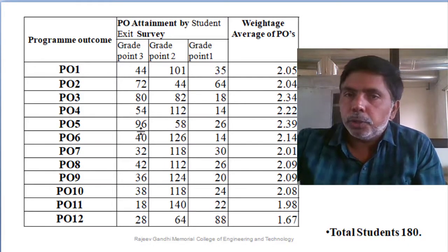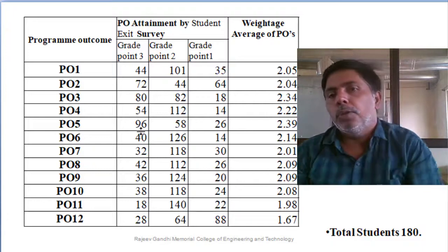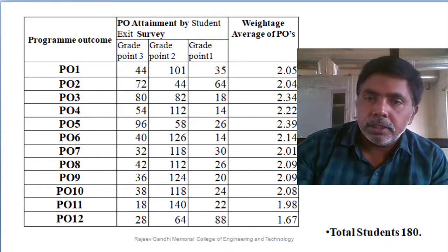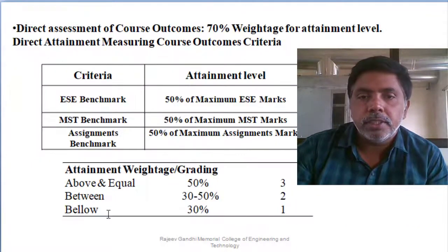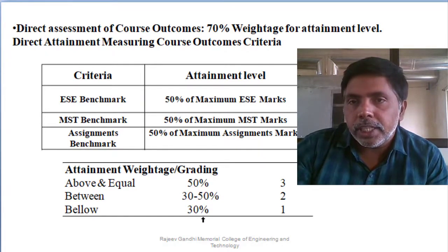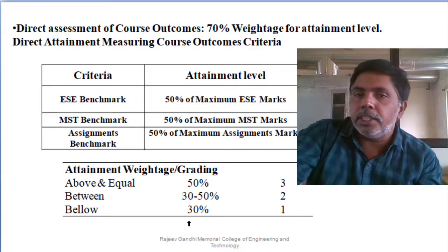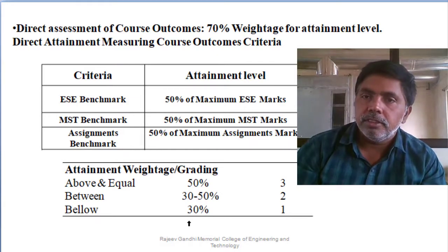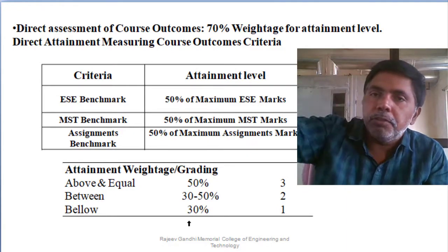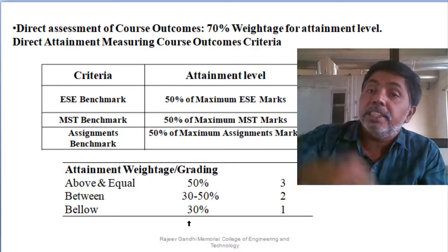The outgoing student PO attainment — combining direct and indirect at 10% each for alumni, exit survey, and employer totaling 30% indirect — can be represented graphically year-wise. The method does not change; what changes according to student intake quality is the condition of attainment values and benchmark grades. If after ten years you are still at 50%, you have not enhanced anything.